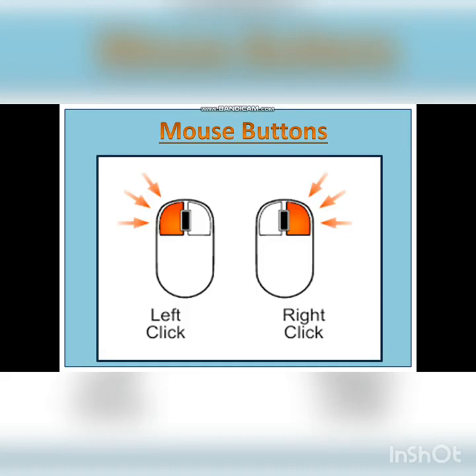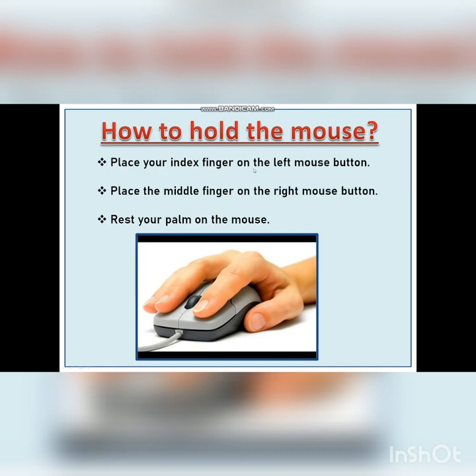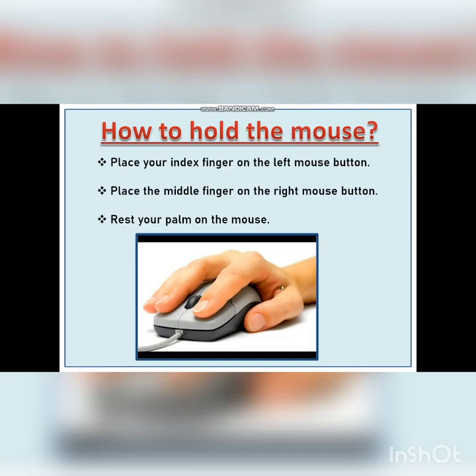How to hold the mouse? Place your index finger on the left mouse button. Place the middle finger on the right mouse button. Rest your palm on the mouse. Students, you can see in the picture that the index finger — the first finger of your hand — is placed on the left mouse button, the middle finger is placed on the right mouse button, and your palm rests on the remaining part of the mouse. This is how you hold the mouse and operate it very easily.